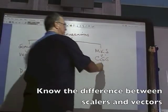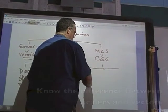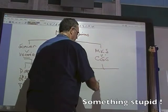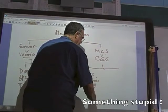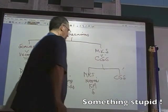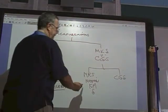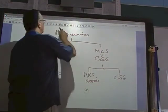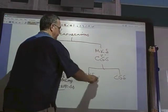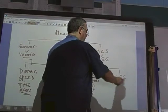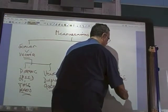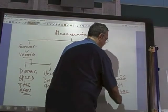MKS stands for what? Meters, kilograms, seconds. CGS stands for centimeters, grams, seconds.